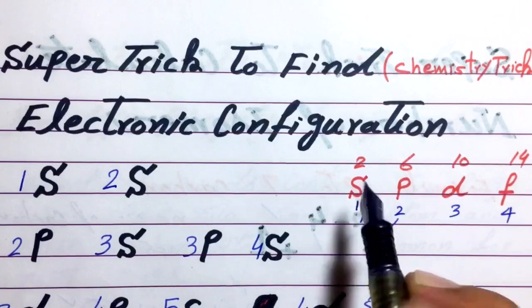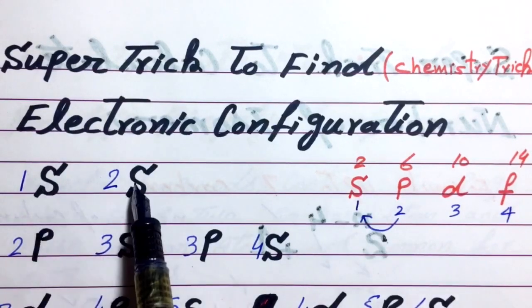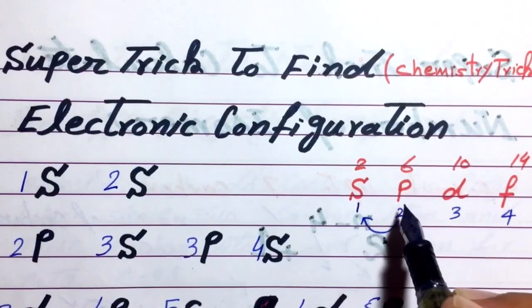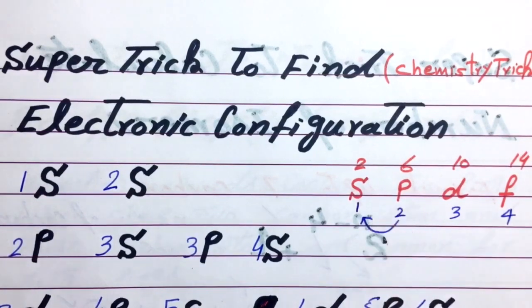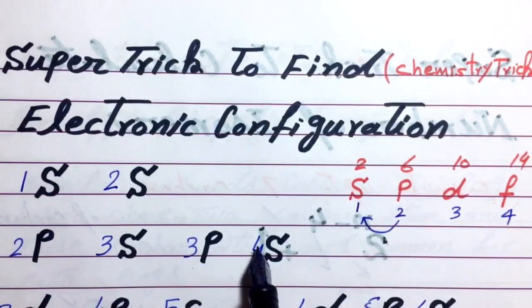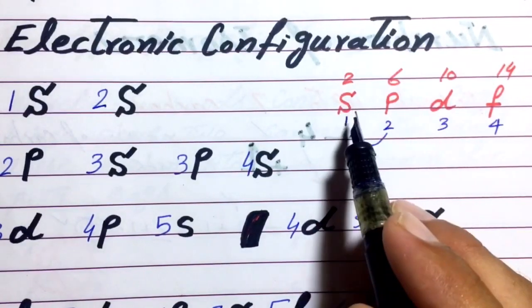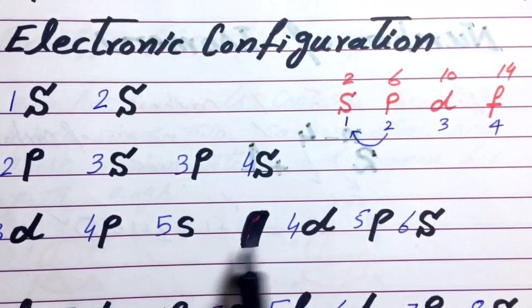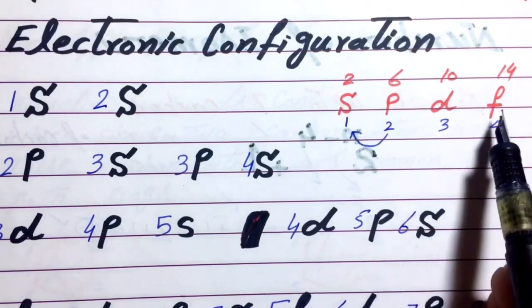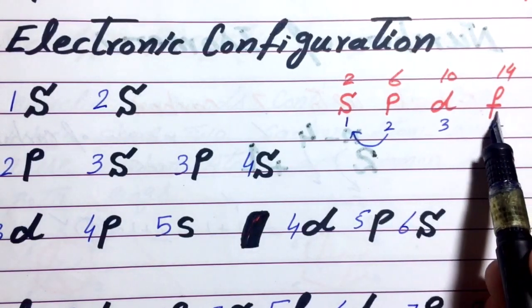Now the trick is write S 2 times, S in reverse order. Write P, S, P, S for 2 times. Similarly D, P, S, D, P, S. Write 2 times D, P, S, D, P, S.